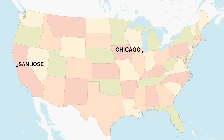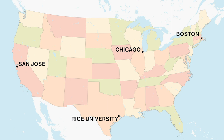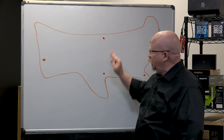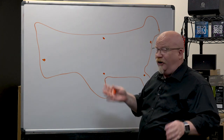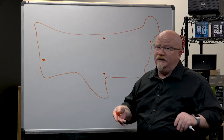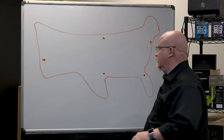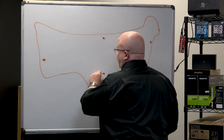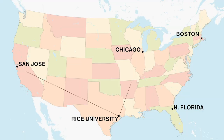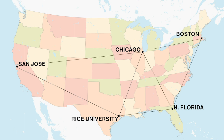We would have connections to LANs up in Chicago, San Jose, Boston, Rice University in Houston, somewhere in northern Florida. We're talking the late 1970s, early 1980s. These were connected through basically telephone lines back in the old days.